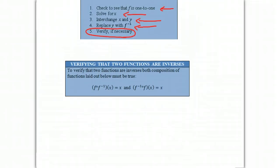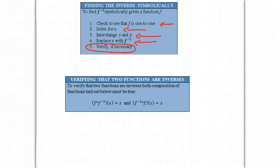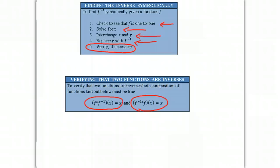And that is written right down here. To verify that two functions are inverses, both compositions laid out below must be true. It must be true that the composition of f and the inverse is equal to x, and that the composition of the inverse and f is also equal to x. Inverses undo each other, so it only makes sense that when you do the composition of a function and its inverse, you get x. If both of these are true, you know for a fact that the two functions are inverses.